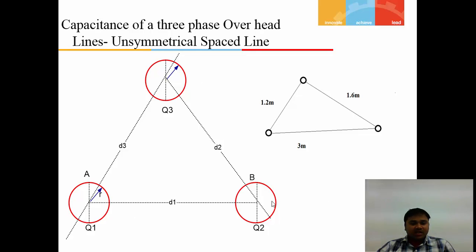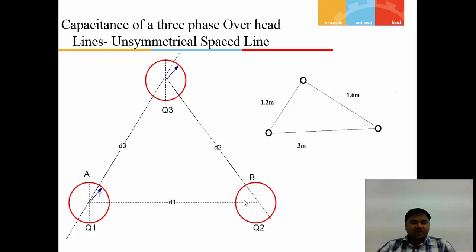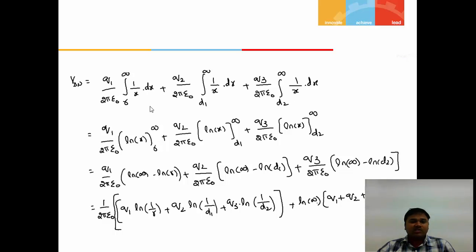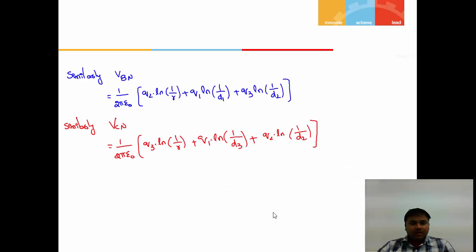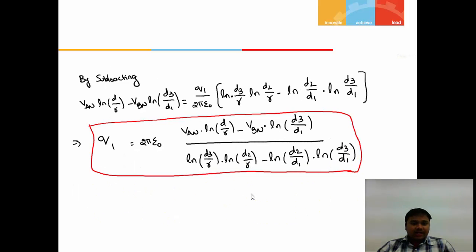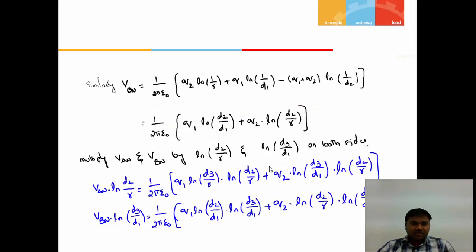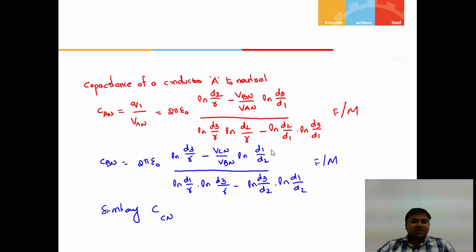For capacitance of a three-phase overhead line in unsymmetrical spacing: three conductors A, B, and C are separated by three different distances D1, D2, and D3, carrying charges Q1, Q2, and Q3. The potential V_AN is the sum of contributions from all three conductors using the same integration approach. After algebraic manipulation, the capacitance of conductor A to neutral can be determined. The same procedure applies for V_BN and V_CN.